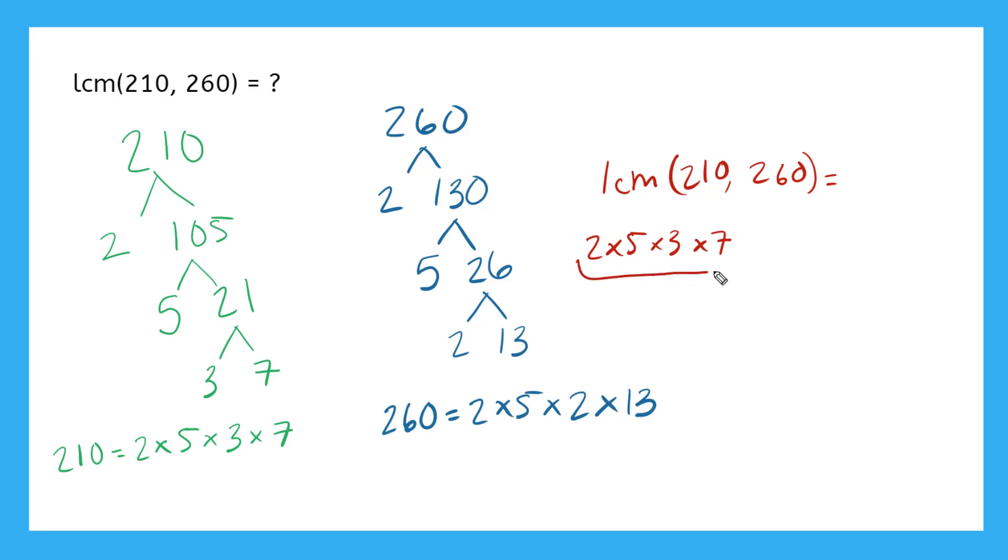And in 260, I have a 2 and a 5, which I already have there, but not the 3 and 7. I need another 2 and a 13. So I'm going to add that on here: times 2 times 13. So now I see these ones here can combine with these ones here, and that gives me 260.